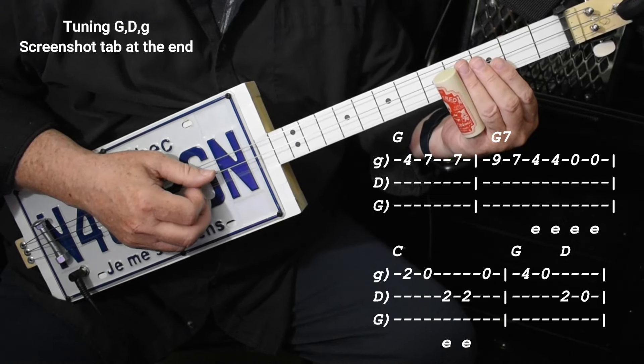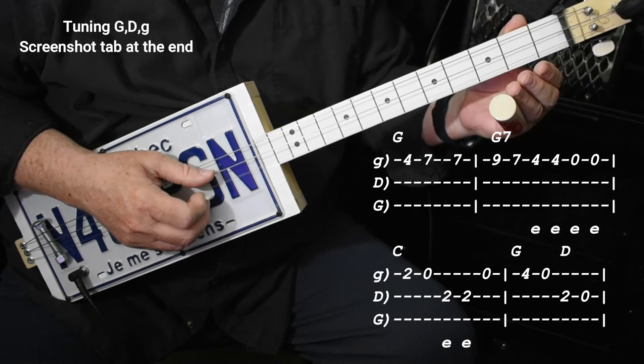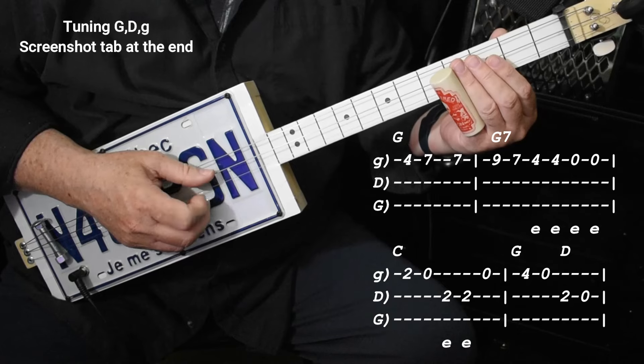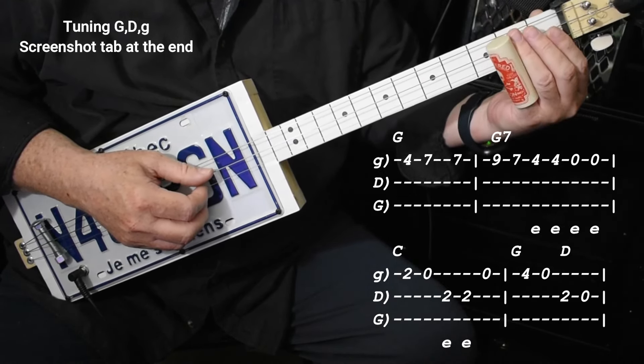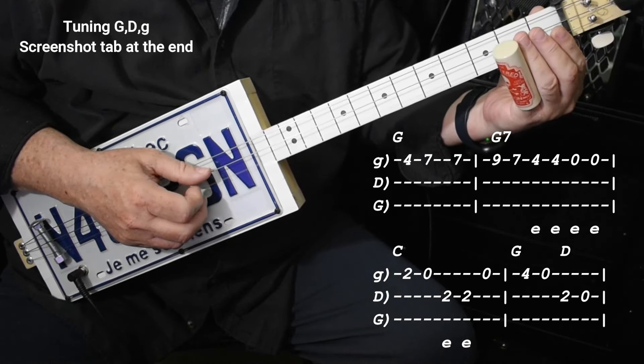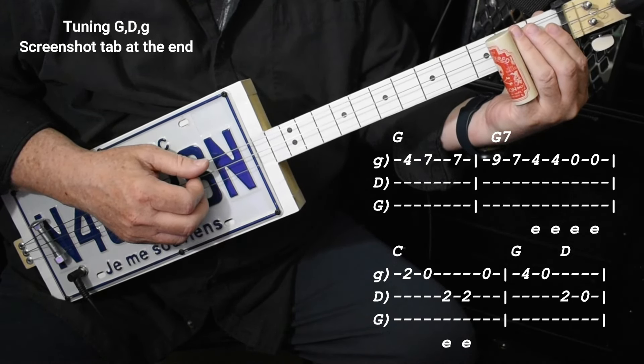So the four is eighth notes. And the count would be 3-and-4-and - you could hear my voice over top of that. Then 2-0. And then eighth notes again on the middle string on the second fret.